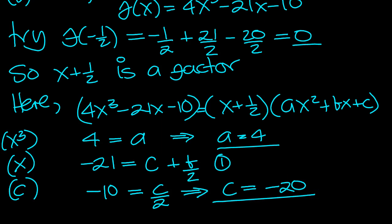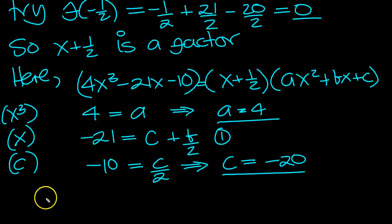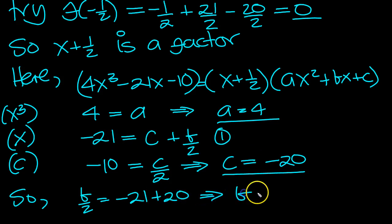So there's c, so now we can just get b. So b is equal to, so b over 2 is here, is equal to minus 21, which is here, and I'm going to move the c over to be minus c, minus minus 20 is plus 20. So that tells us that b is equal to minus 1, move the 2 up, b is minus 2.